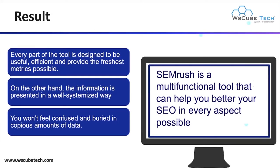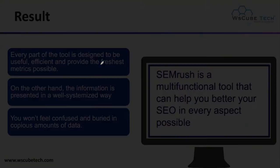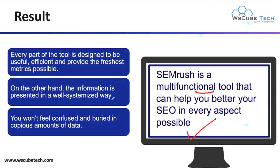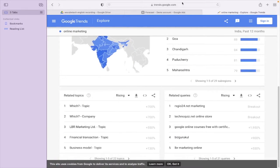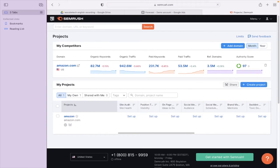SEMrush is a multi-functional tool that can help you improve your SEO in every aspect. Every part of the tool is designed to be useful, efficient, and provide the freshest data possible. The information is presented in a well-organized way so you won't feel confused by large amounts of data. To use SEMrush, simply visit Google, type SEMrush, and open the site.